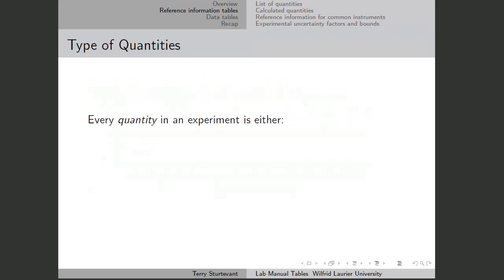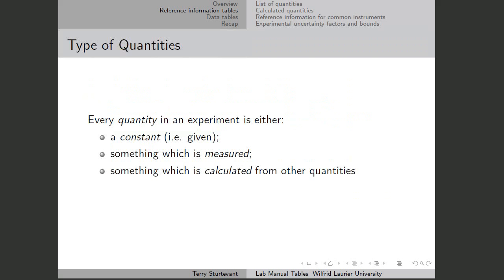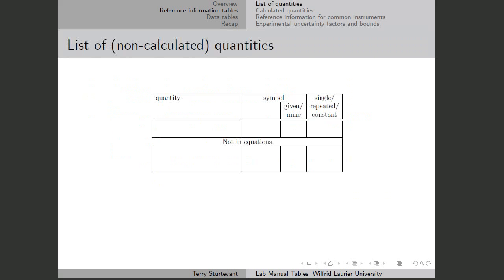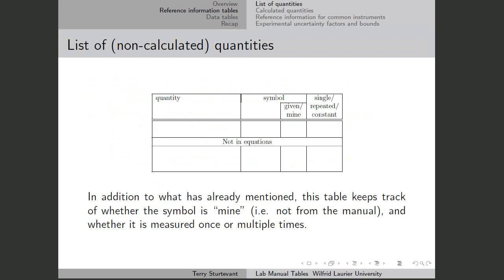For quantities, every quantity in an experiment is either a constant that is given in advance, or it's something that's measured, or it's something that's calculated from other quantities. There are two tables that contain this information. The first table shows non-calculated quantities, keeping track of the quantity, the symbol, whether the symbol is given in the lab manual or one that I create, and whether the quantity is measured once, measured multiple times, or is a constant that's given.